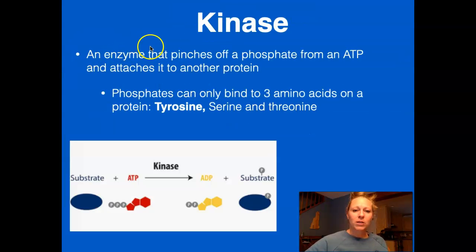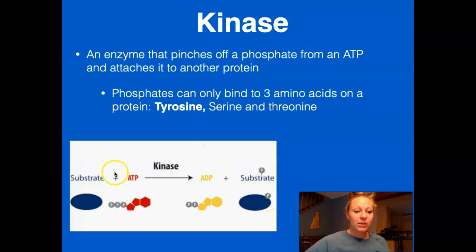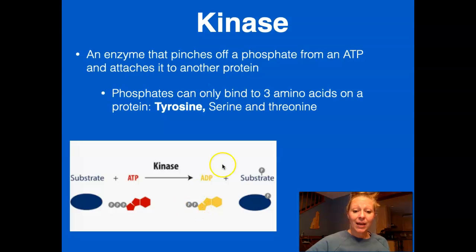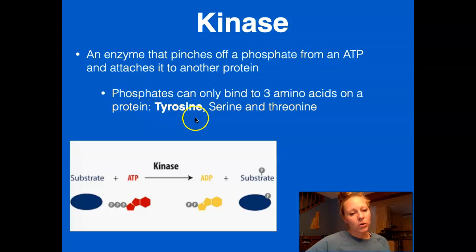The third concept is a kinase. Kinases are types of enzymes that simply take a phosphate from an ATP and attach it to a protein. Here are the reactants, and here's the kinase enzyme that facilitates the chemical reaction. We can see there is now one fewer phosphate group, and it is attached to the protein. Phosphates can bind only to three amino acids on a protein: tyrosines, serines, and threonines. Remember tyrosine specifically, because this will come up later.